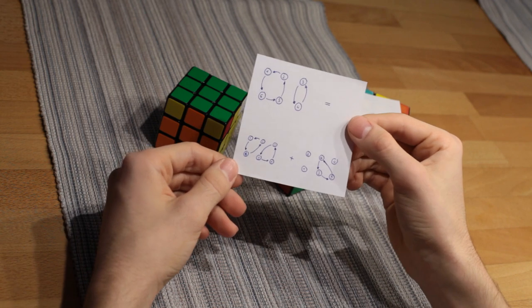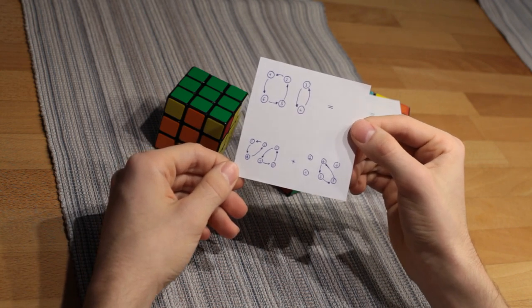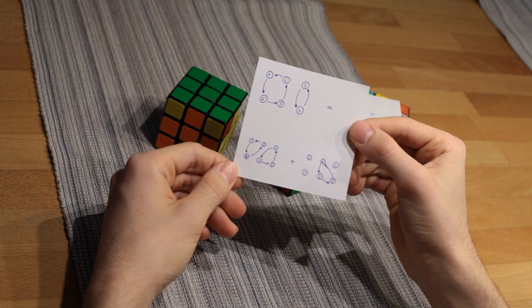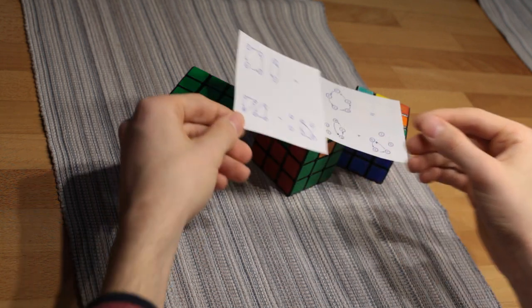A system with an even number of swapped pieces can only exist if a second even system is created in the process.